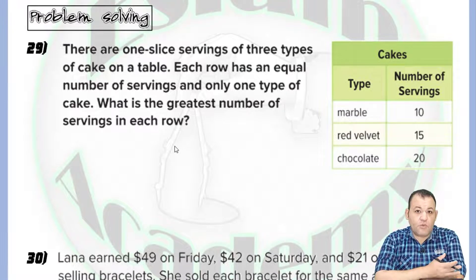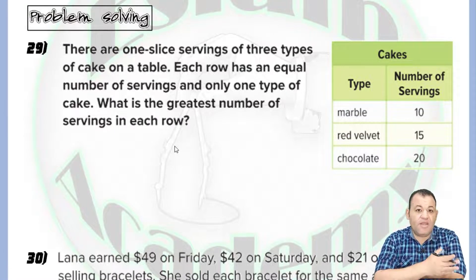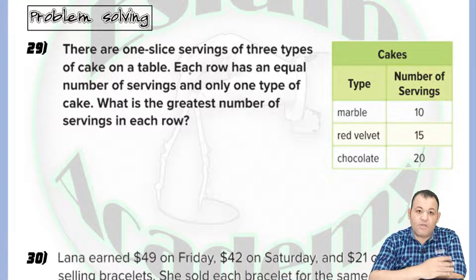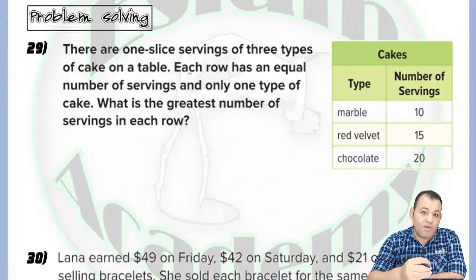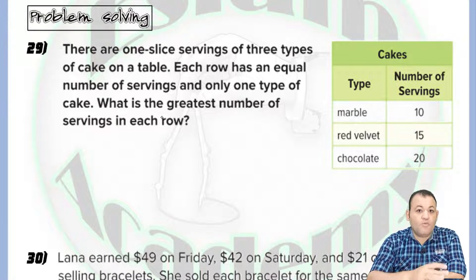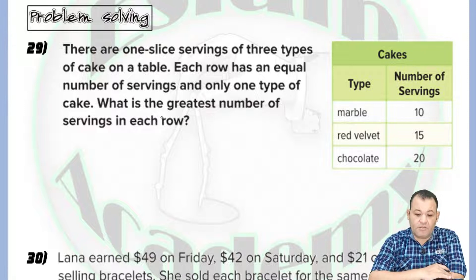In this part of the lesson, we'll learn how to use the greatest common factor and the lowest common multiple in problem solving. For the table we have, there are three types of different cakes. The problem wants us to rearrange the cakes putting the same number in each row. We need to find the greatest number of servings per row, which means we need to find the greatest common factor.